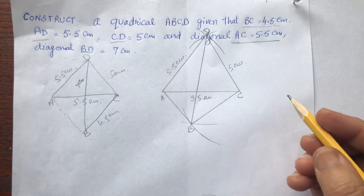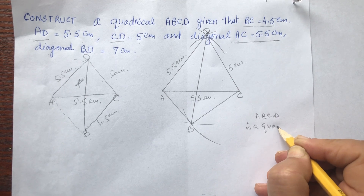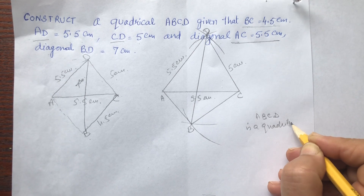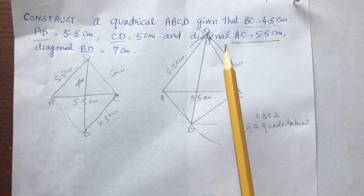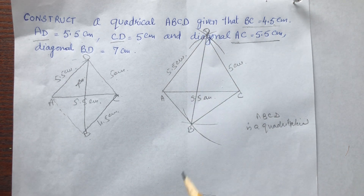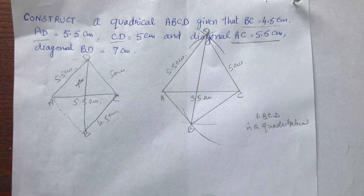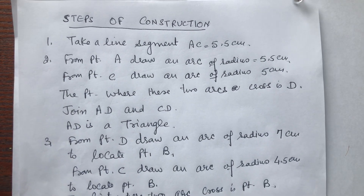One side is left — join that also. This is the required quadrilateral ABCD. You should not go inside the figure like this; you should move somewhat down and take proper place for it. Now we have to write down the different steps of construction. Whatever I was telling you while drawing — those were the steps of construction.